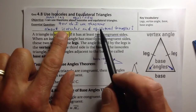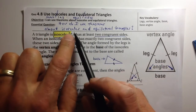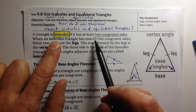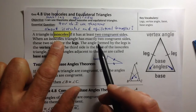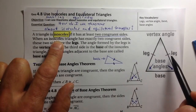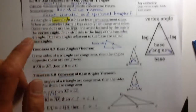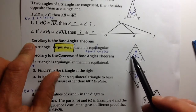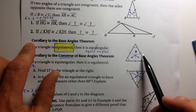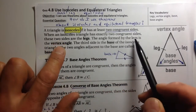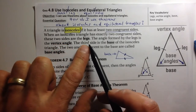Our essential question: how do I use theorems about isosceles and equilateral triangles? Let's define an isosceles triangle first. It is an isosceles triangle if it has at least two congruent sides. Even an equilateral triangle is really an isosceles triangle because it has at least two — actually three — congruent sides. When an isosceles triangle has exactly two congruent sides, those two sides are called the legs.